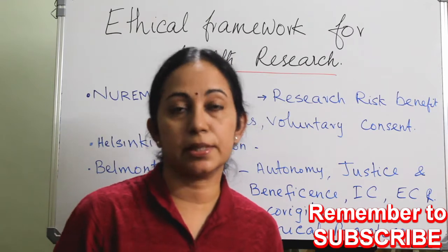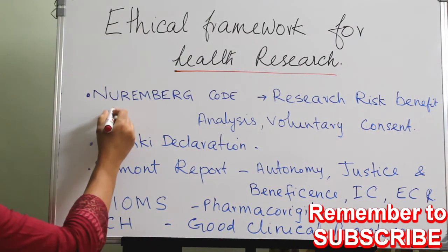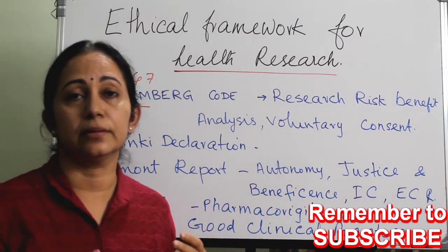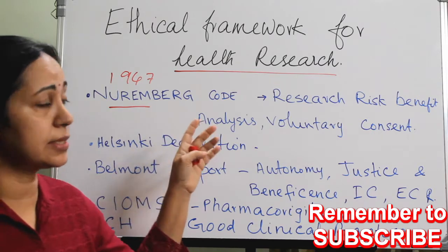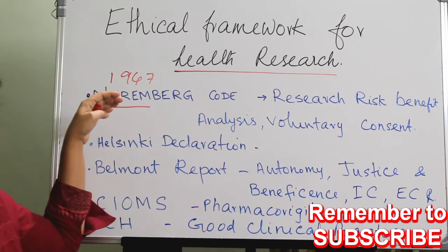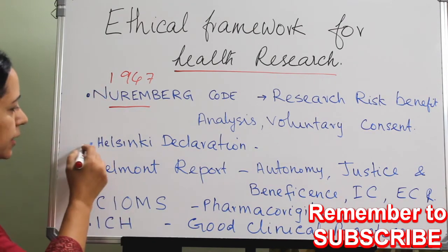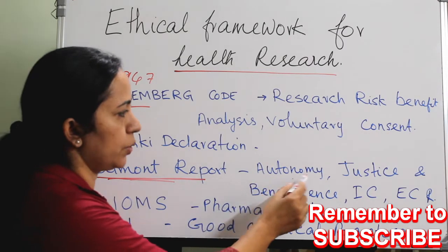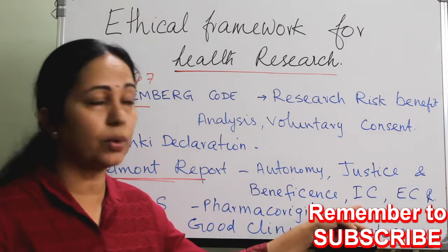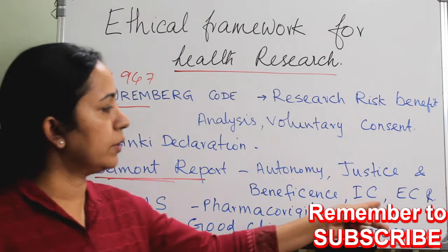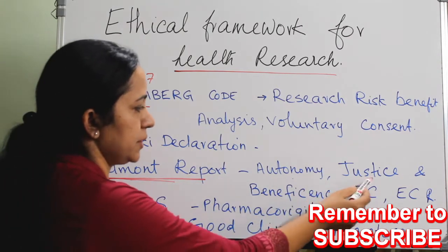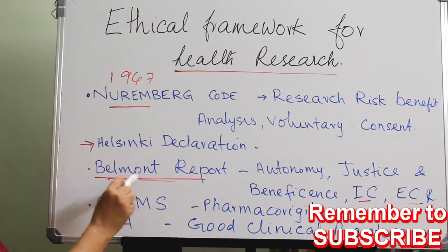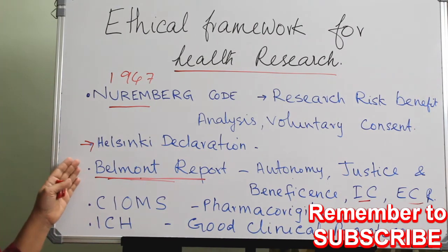Various guidance documents have evolved, starting from the Nuremberg Code. This was the first step of its kind, which evolved in 1947, and it initiated the analysis and documentation on risk-benefit analysis and voluntary consenting. Then came the Helsinki Declaration. The Belmont Report is also an important step, which mainly describes autonomy, justice, and beneficence, as well as informed consent and the importance of ethics committee review.